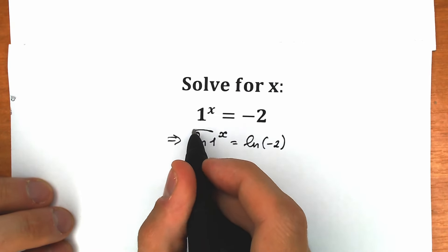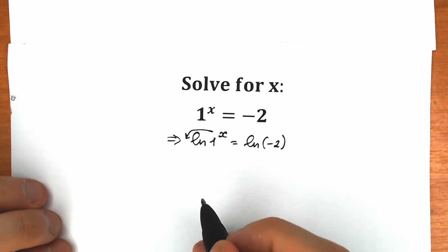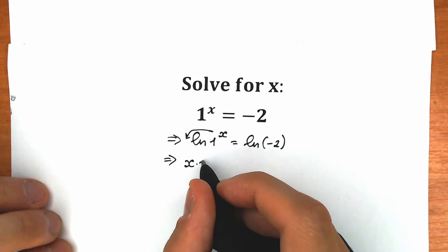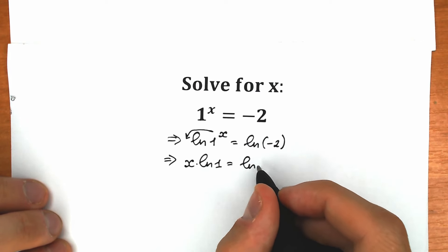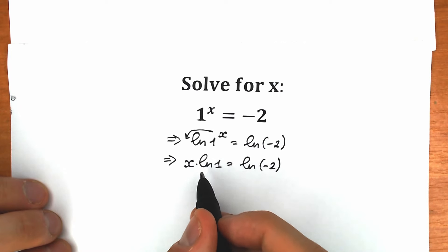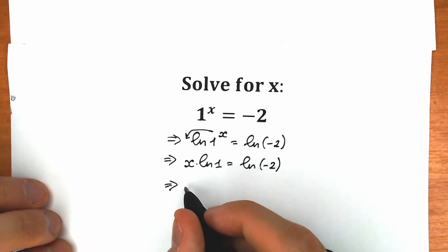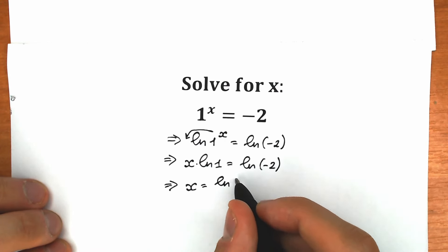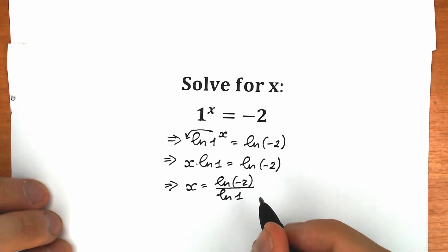Now this x will come down because of the main log property — the main log trick. As a result we have x times natural log 1 equal to natural log minus 2. The last step is to divide both sides by natural log 1.